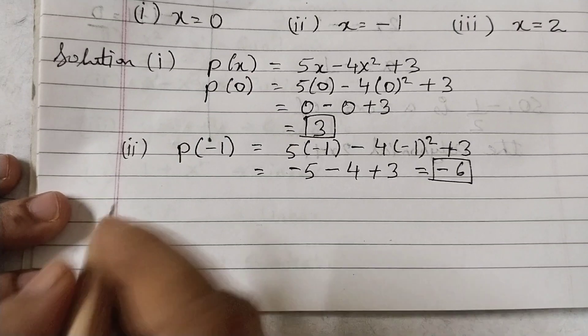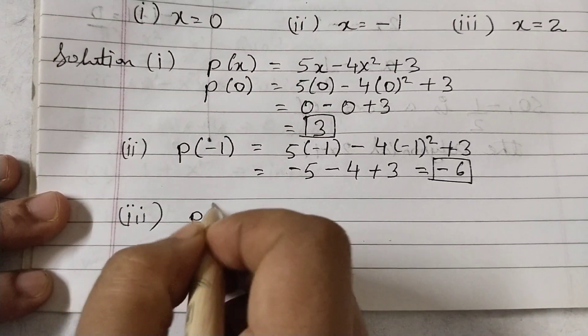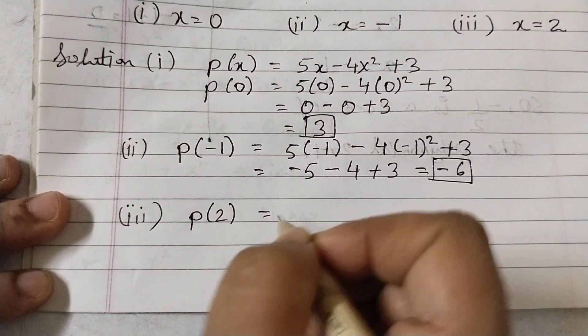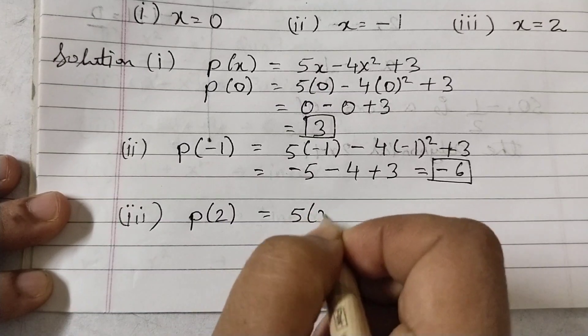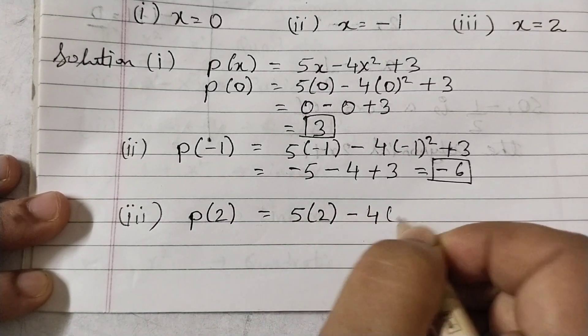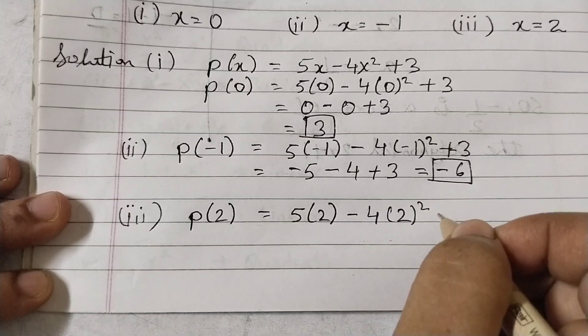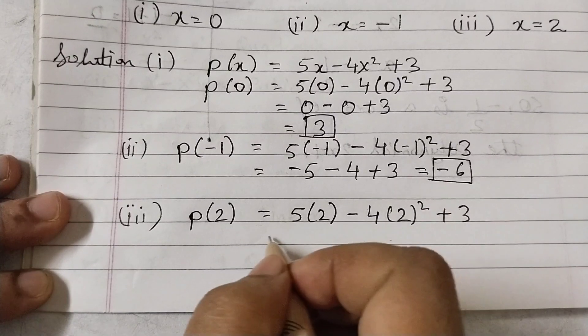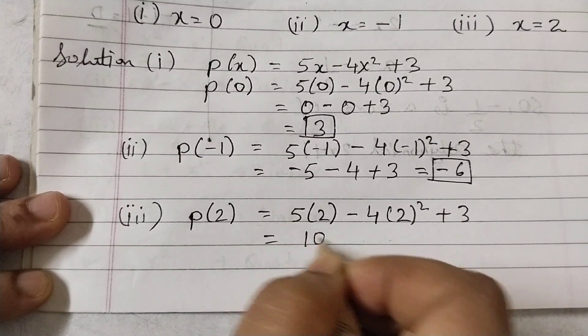So p of 2 is equal to 5 into 2 minus 4 times 2 squared plus 3. 5 into 2, 10 minus...